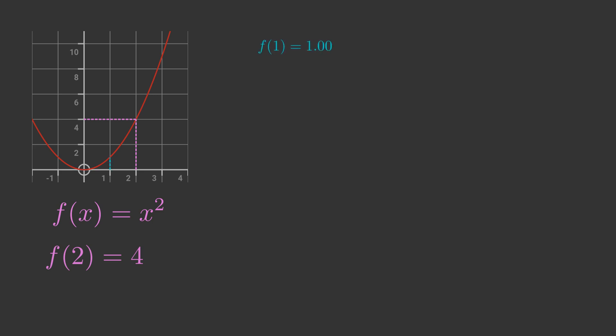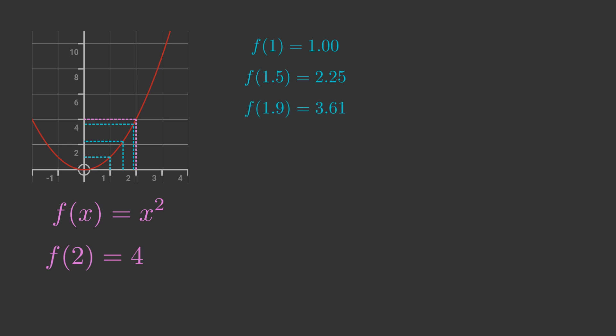For example, when x is 1, f is 1. When x is 1.5, f is 2.25. When x is 1.9, f is 3.61. Each time x gets closer to 2, f gets closer to 4. When x is 1.99, f gets even closer to 4. When x is 1.999, it gets closer still.